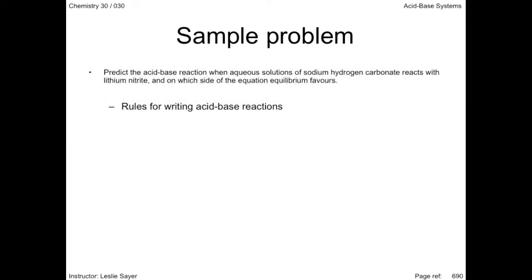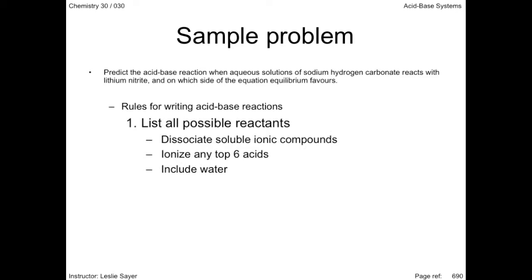First, we identify all possible reactants. These are aqueous solutions, so we dissociate all water-soluble ionic compounds. We also ionize any top six acids into a hydronium ion and its conjugate base. And add water, since water could serve as either an acid or a base. List also all molecular compounds, including weak acids.